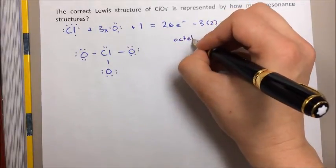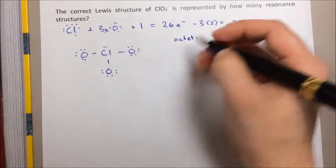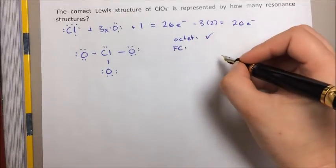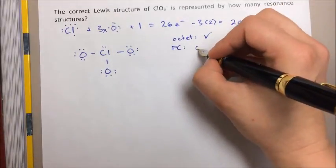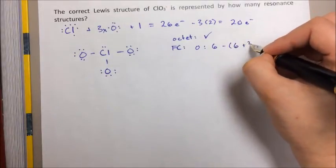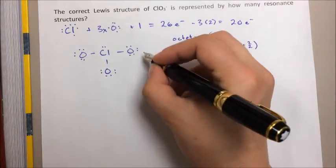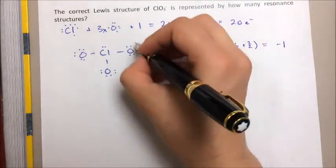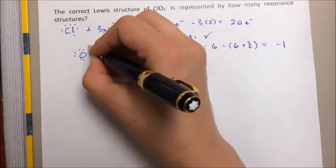Let's do an octet check. Everything seems like it's got eight electrons, so that's good. Now we need to do formal charges. In the case of the oxygen, that's going to be 6 minus 6 plus 2 over 2 because there are six lone pair electrons and two bonding electrons, giving us minus one. So all of these are going to have a minus one formal charge.